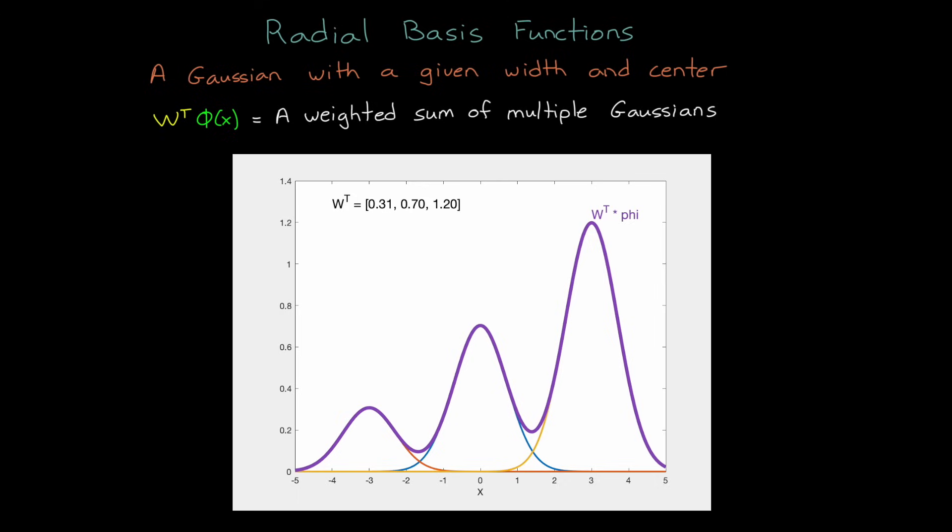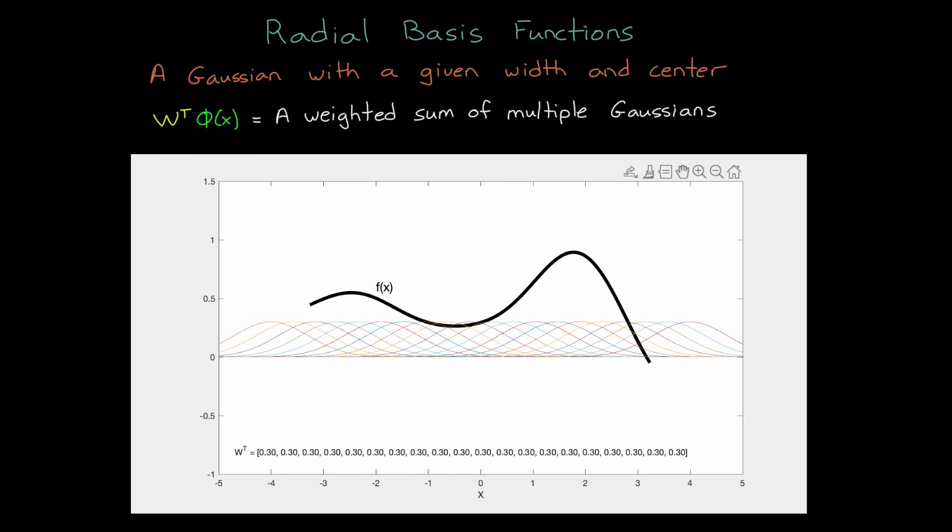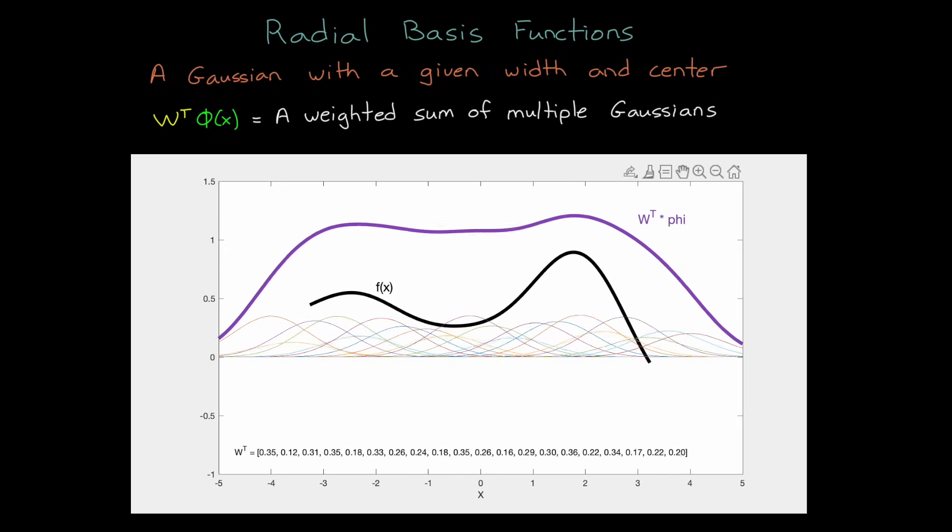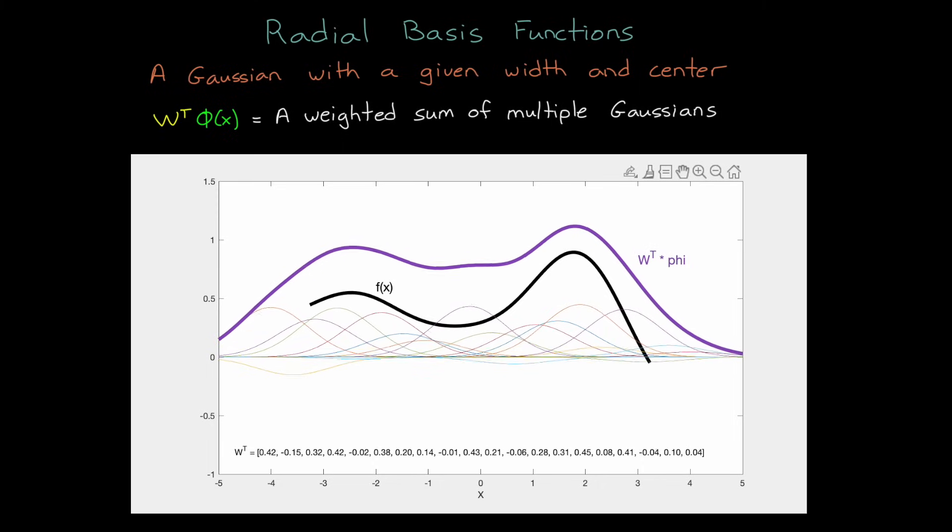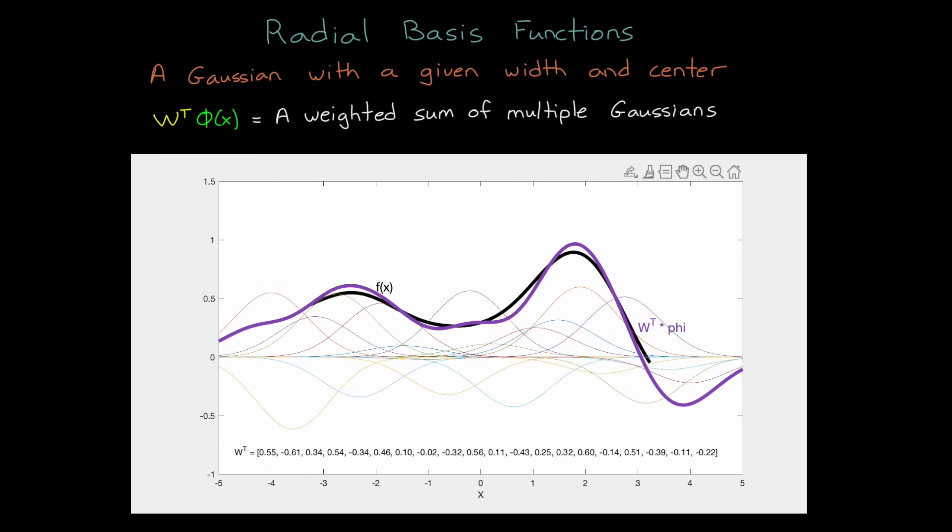However, there's not much flexibility if we just use three radial basis functions, so we may want to increase the number. For example, let's say that this black line is the real uncertainty function f of x. Now we define 20 radial basis functions that span across the input space. And the purple line is the result of W transpose times phi. And at this point, we can start adjusting the weight vector, which changes the amplitudes of each of the Gaussians, which then changes the estimated function until we get to some optimal set of weights. And finding this optimal weight vector is where adaptive methods come into play.